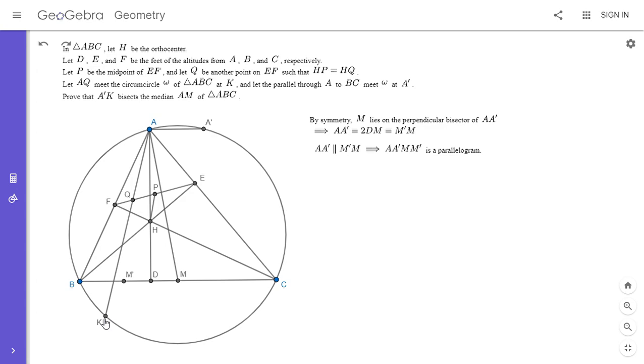So the next thing I noticed was, so first, BFEC is a cyclic quadrilateral. So that's a well-known fact. That's true because angle BFC is equal to angle BEC, which are both 90 degrees. So BFEC is cyclic.